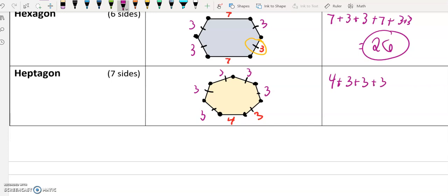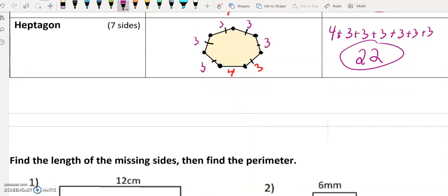So if I have four, then I have one, two, three, four, five, six threes. So that's three, four, five, six threes. And that gives me a total of 22 as my final answer there.